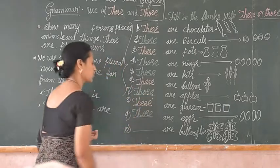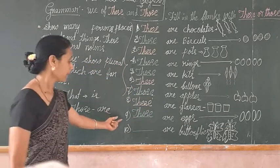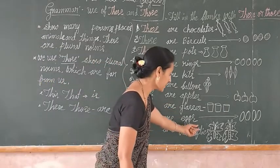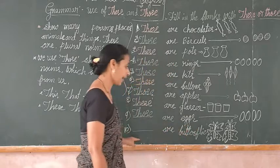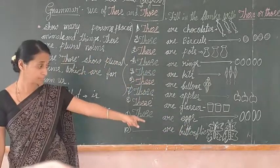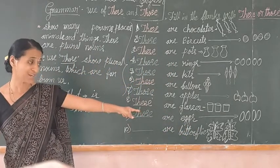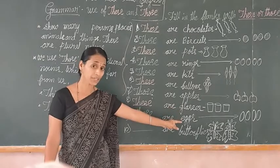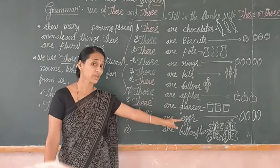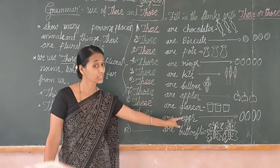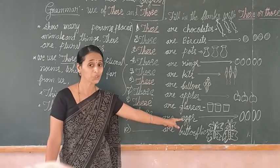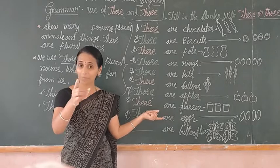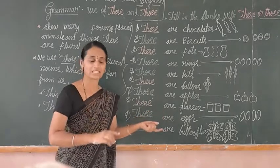Last example: blank of butterflies. Are the butterflies near to me or far away? Butterflies are near to me, so we use 'these.'